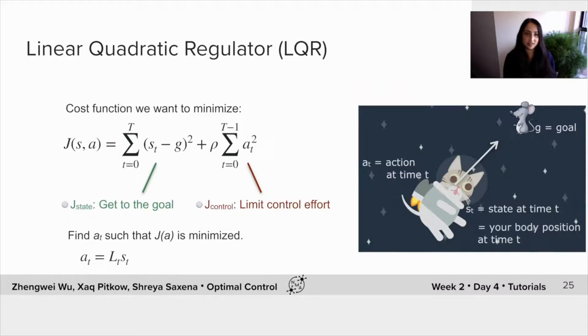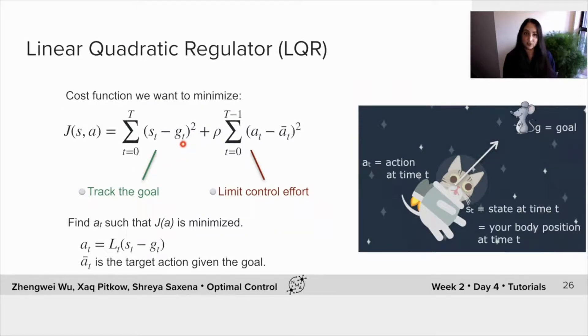So I'll flip through these slides again, so you'll notice the difference. G here is static. And here we have G of T as a function of time. There's also this extra addition, and that is the A bar of T. It's actually the target action given the goal.